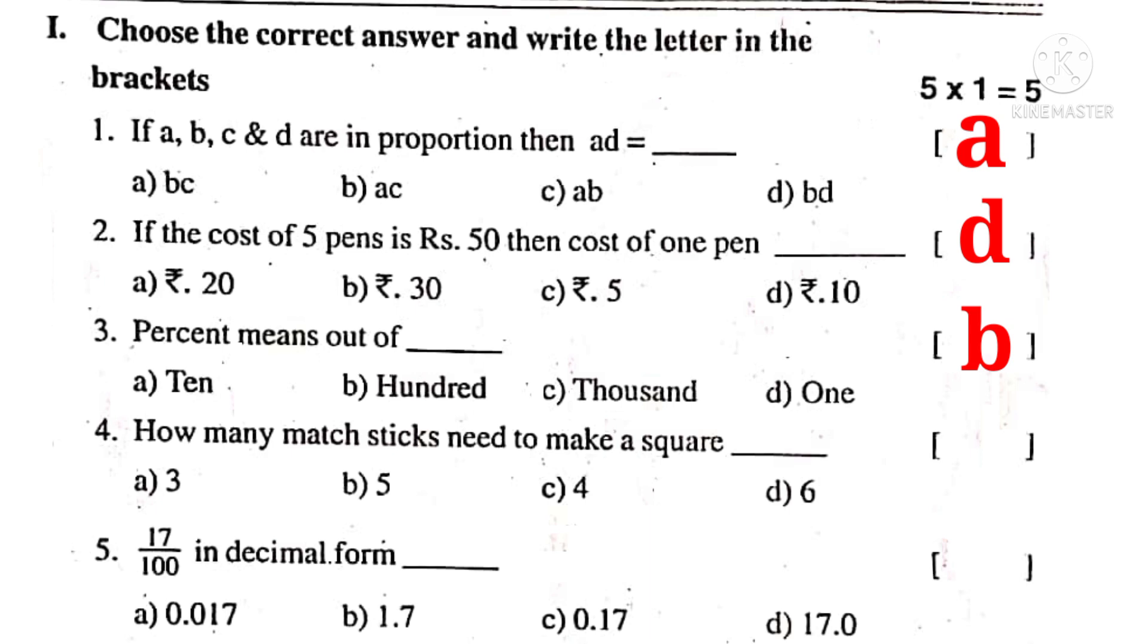No. 4. How many matchsticks need to make a square? 1, 2, 3, 4. So 4 matchsticks are required. So the correct choice is C.